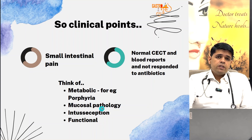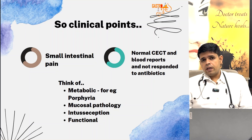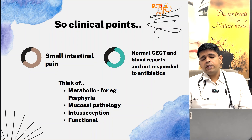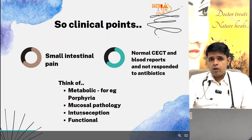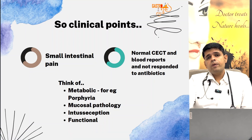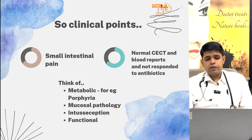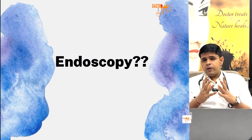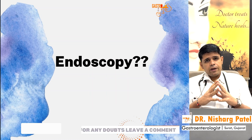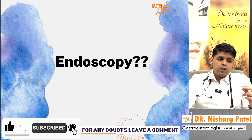It could also be some mucosal pathology, because the mucosa cannot be seen on ultrasound or CT scan. CT enterography can help us assess mucosal pathology, but sometimes even CT enterography can be normal. There can be transient intussusception, which is very common in children and can cause severe abdominal pain and vomiting, or it can be some functional problem. We also discussed whether endoscopy is required in this case — we will discuss that part later.